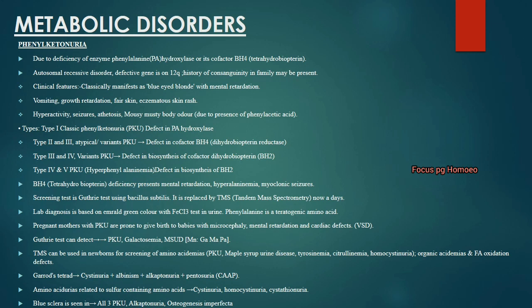Other features of PKU include hyperactivity, seizures, ichthyosis and mousy/musty body odor. Type 1 classic PKU is a defect in phenylalanine hydroxylase. Types 2 and 3 are atypical variants due to cofactor BH4 deficiency — specifically dihydrobiopterin reductase deficiency. Types 4 and 5 variants of phenylketonuria involve defects in biosynthesis of cofactor BH2.